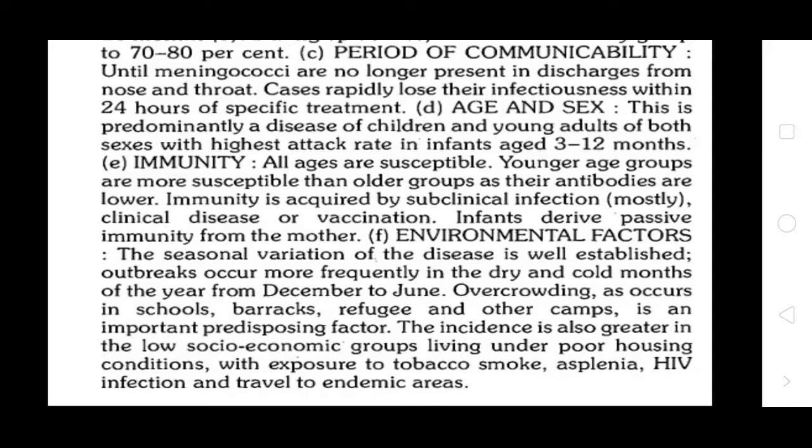Regarding immunity: all ages are susceptible. Younger age groups are more susceptible than older groups as their antibody levels are lower. Immunity is acquired by subclinical infection, clinical disease, or vaccination. Infants derive passive immunity from the mother.